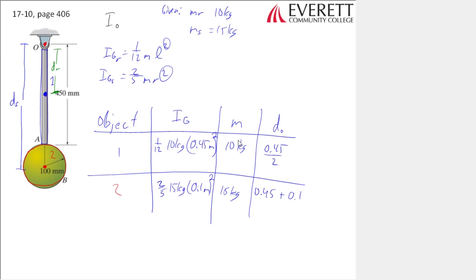Okay, so now all I do is I add it up. So I would have my IO for the rod would be equal to 1/12 times 10 times 0.45 squared plus M-D squared, because my equation for parallel axis theorem is IG plus M-D squared. So I'd have 10 kilograms times 0.45 over 2 squared.